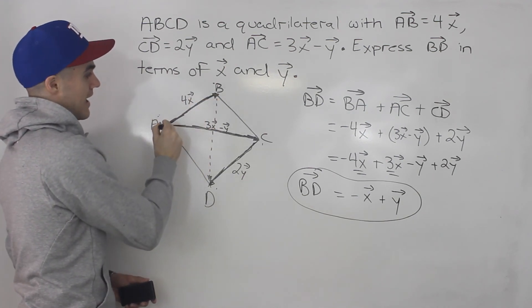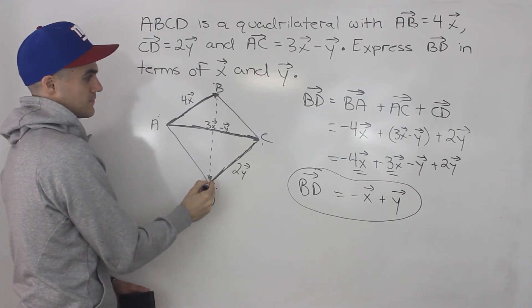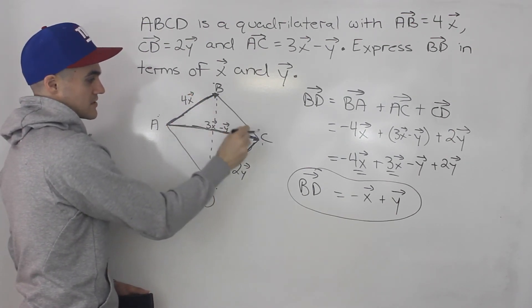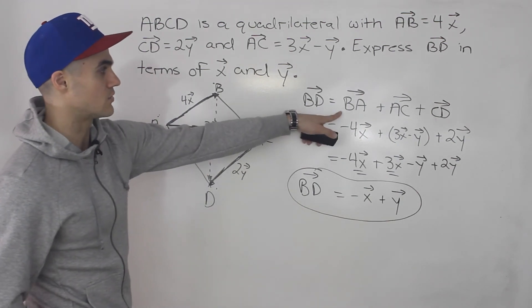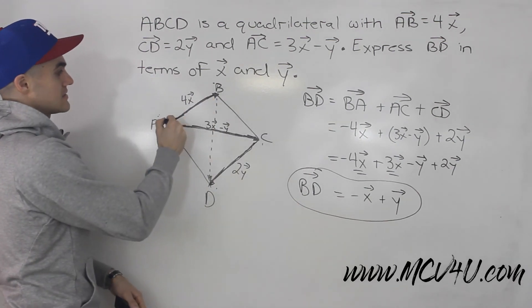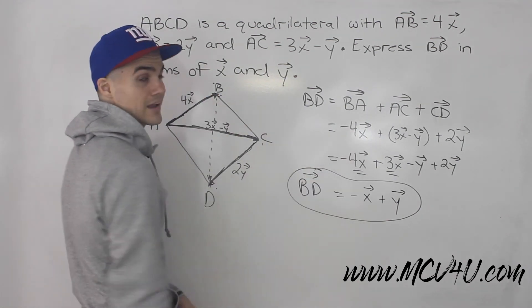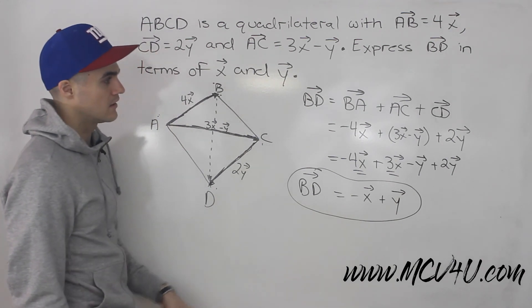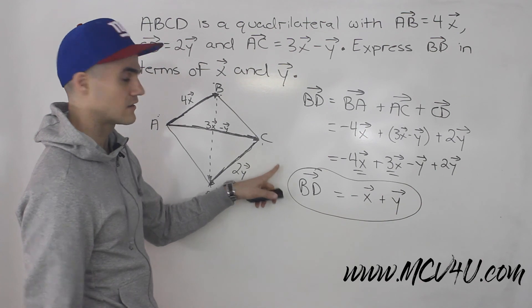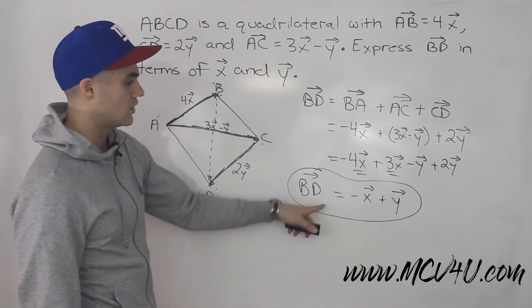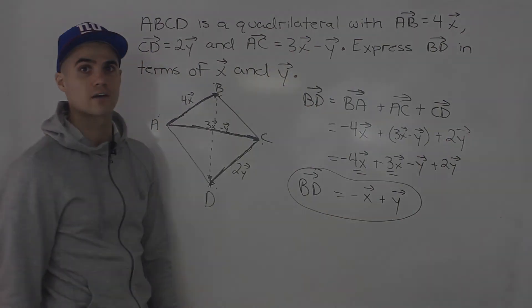So we can go from B to A, then A to C, then C to D. We had expressions in terms of X and Y for those three vectors, so we were able to do that. And then just noticing that vector BA is the opposite direction of AB. So instead of 4 times vector X, you've got to put negative 4 times vector X. And then when you do all of that, collect all the like terms, you end up getting vector BD equaling negative vector X plus vector Y.